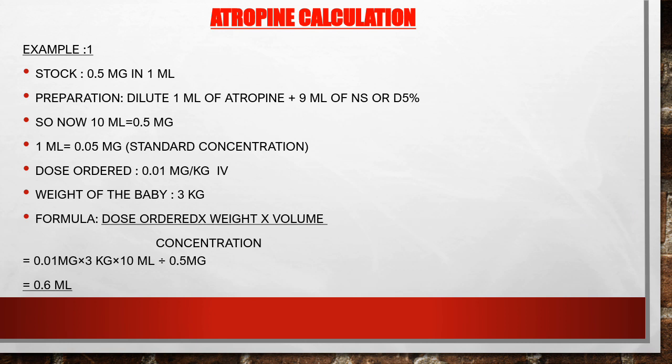Dose ordered: 0.01 mg/kg IV. Weight of the baby: 3 kg. Formula: dose ordered times weight times volume, divided by the concentration. Dose ordered is 0.01 mg, weight is 3 kg, volume 10 ml, divided by the concentration 0.5 mg. You will get 0.6 ml.